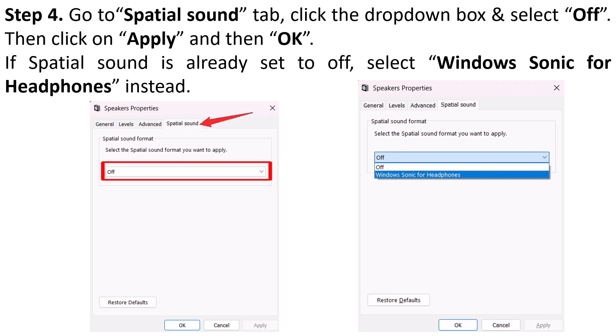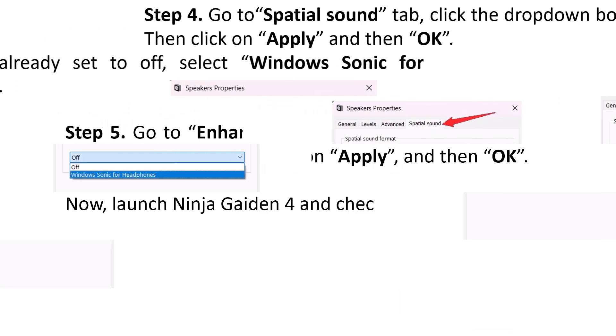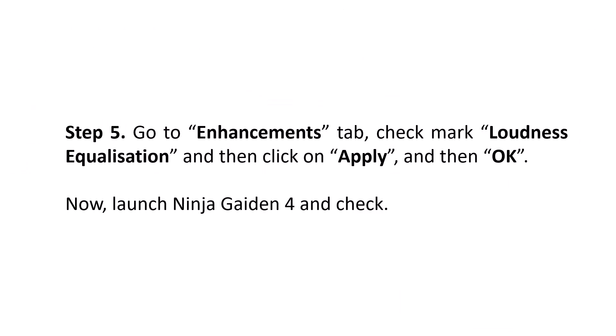Select Off, then click Apply and then OK. If Spatial Sound is already set to Off, then select Windows Sonic for Headphones instead. Now go to the Enhancements tab, check mark Loudness Equalization, and then click Apply and then OK. Now launch Ninja Gaiden 4 and check if the sound or audio issue is fixed.